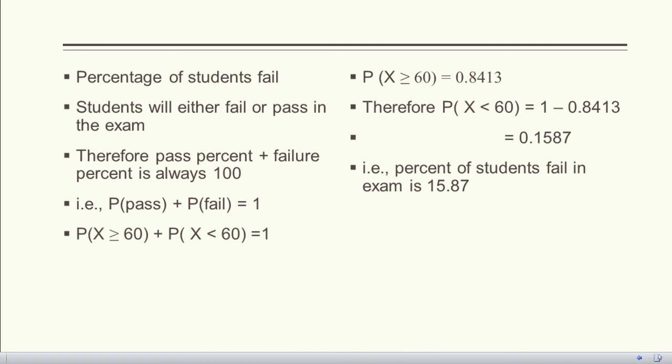The percentage of students who scored below 60 and failed can be estimated as 100 minus the percentage who passed. The probability of failing is 1 − 0.8413 = 0.1587. Therefore, 15.87% of students fail the exam.